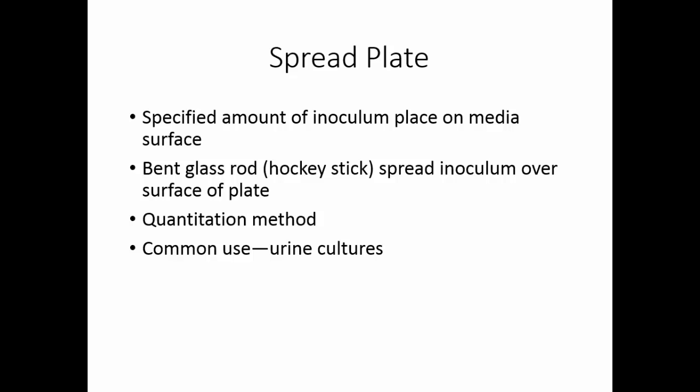For bacterial growth to be clinically significant in a urine culture, you have to grow at least 100,000 colonies per milliliter. Since you planted a thousandth of a milliliter, if you get 100 or more colonies growing on the surface of the plate, you have met that standard. The advantage of the spread plate over the pour plate is that all colonies are on the surface and you can access them easily for identification techniques.